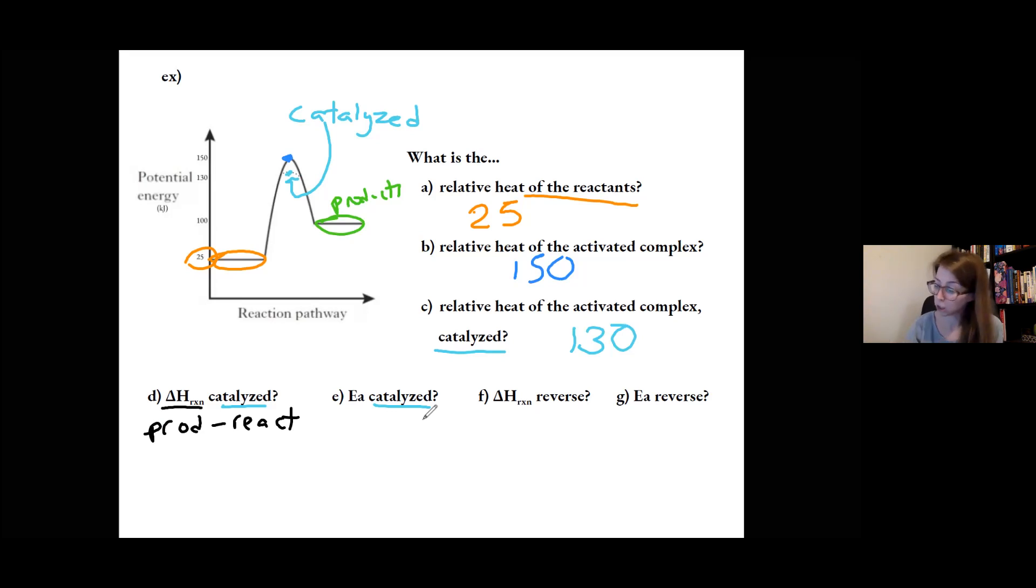I'm going to look at my graph. I'm going to look for my product value, which was 100. I'm going to look for my reactant value, which was 25. And subtracting the two, 100 minus 25 gets me a delta H of 75, and that's a positive value.